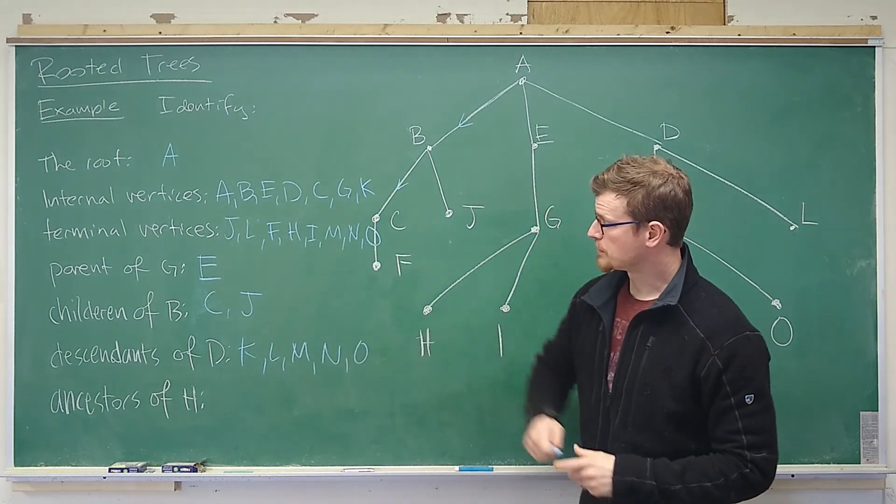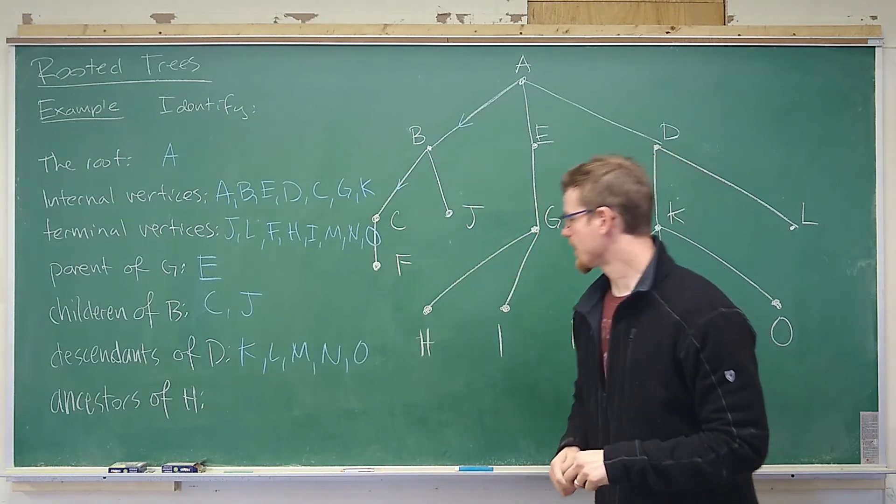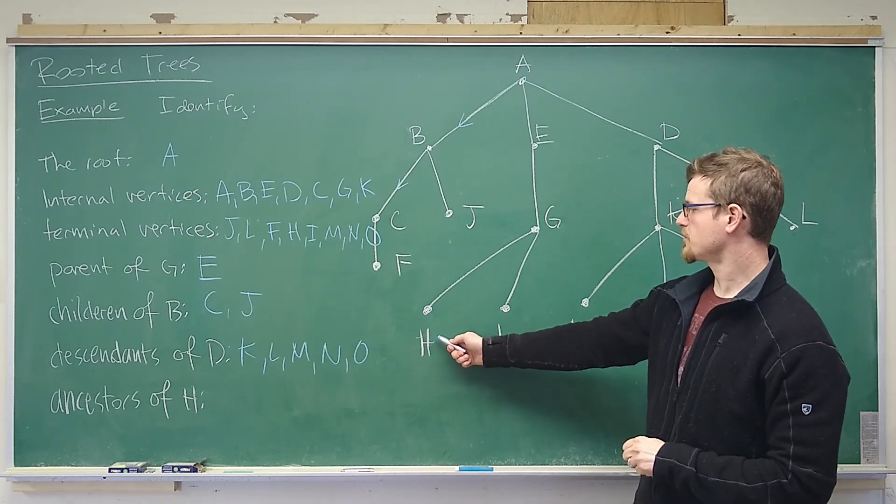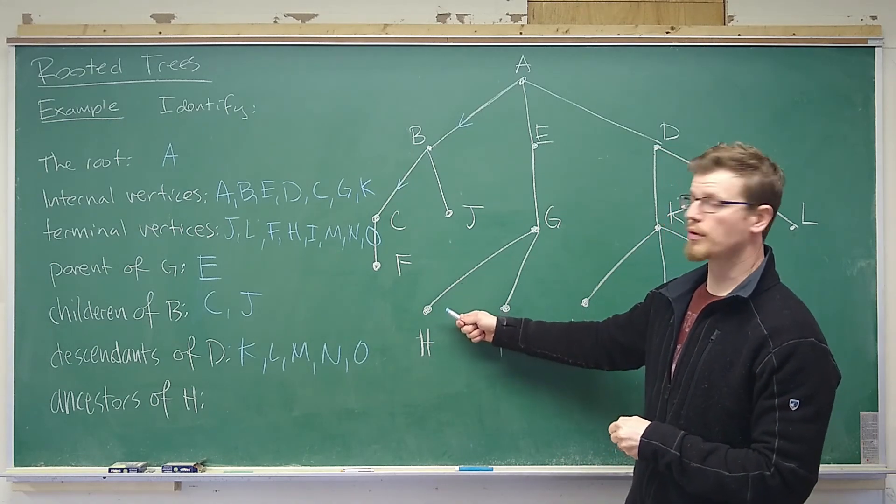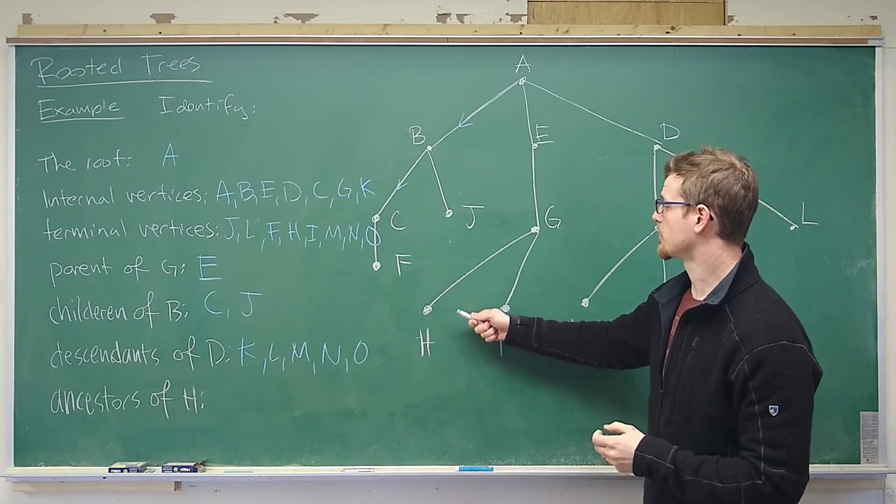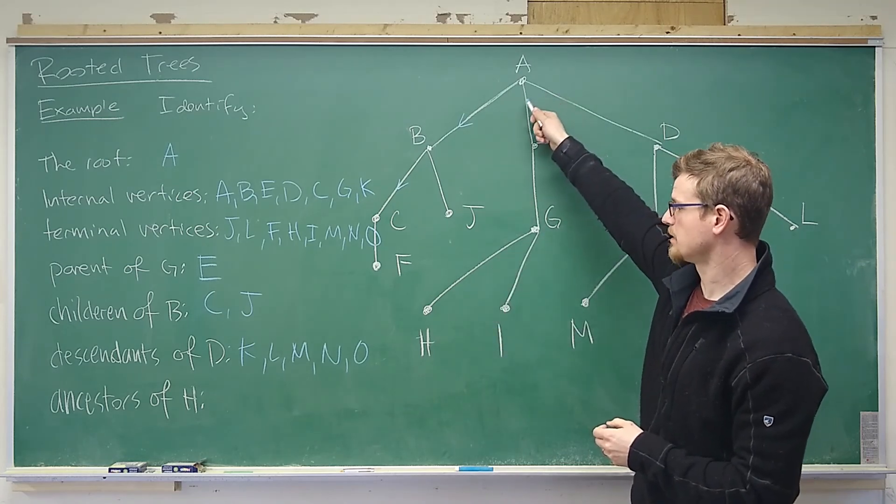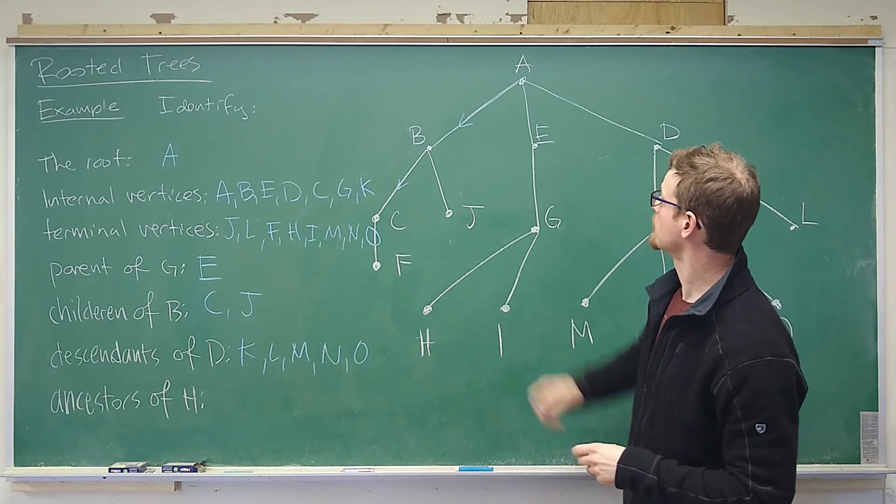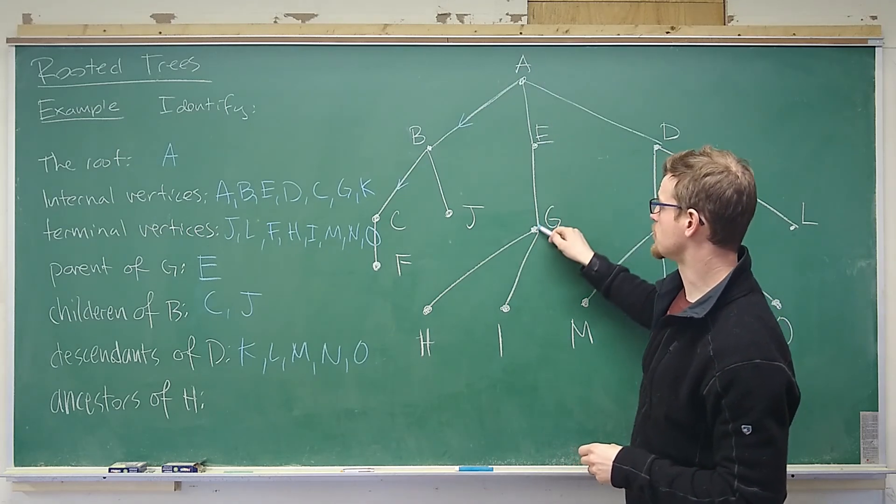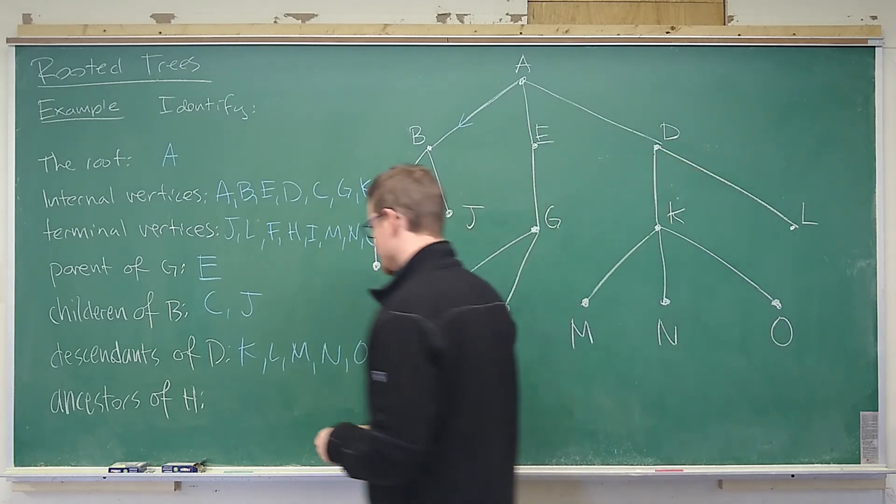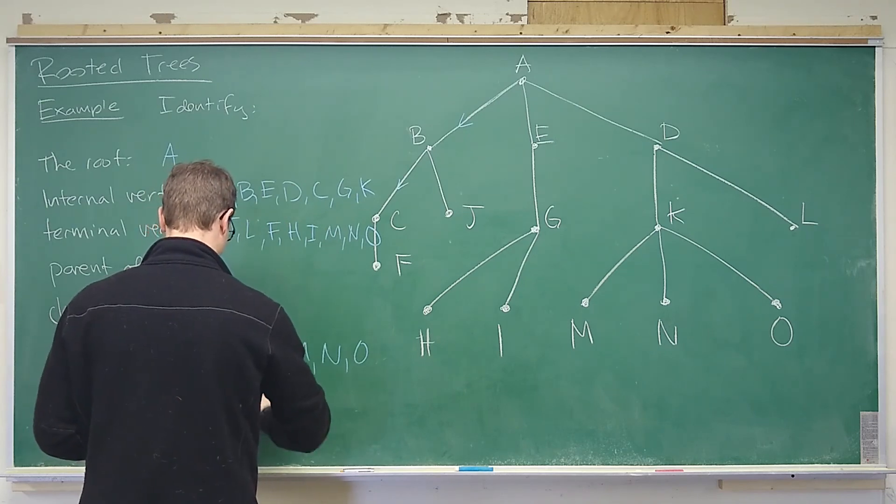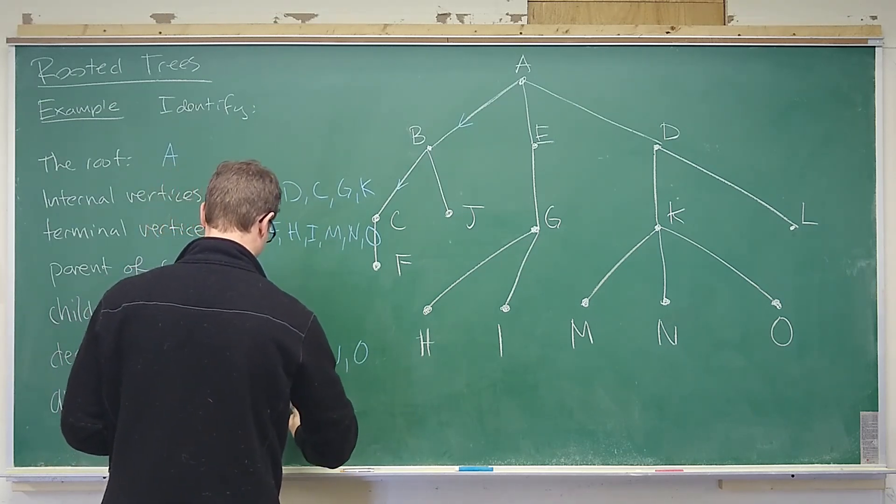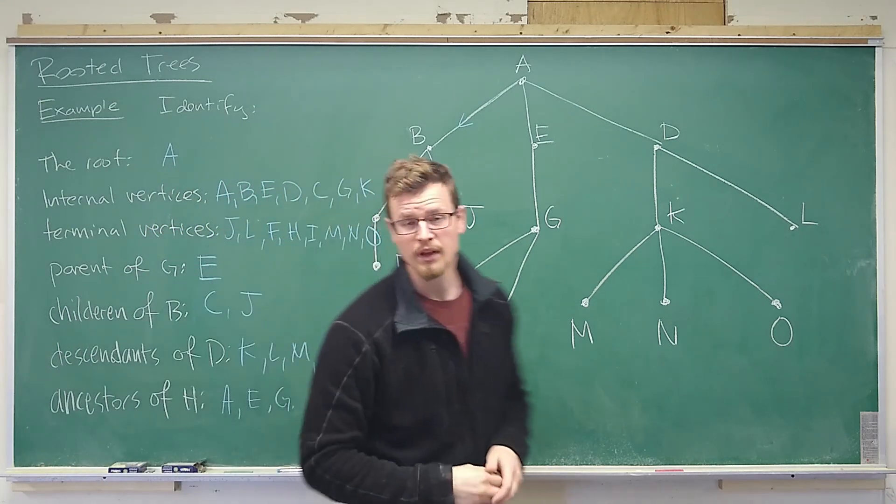And from there we want to determine the ancestors of h. So here is h. And we're just looking for the vertices that appear in the path from a to h. Not including the vertex h itself. So a, e, g. H is not included. Excellent.